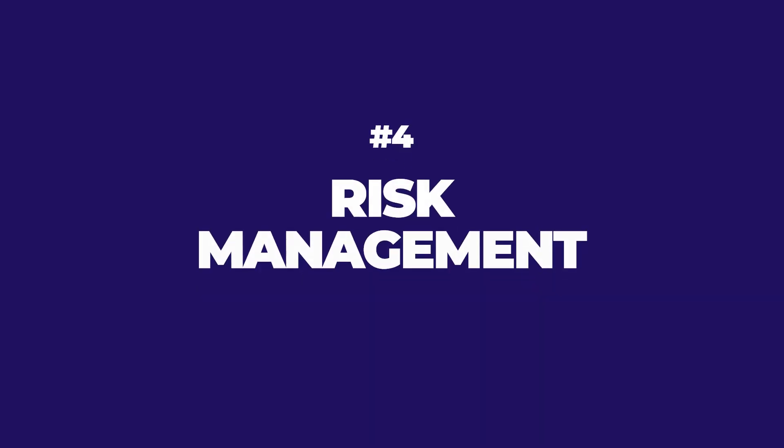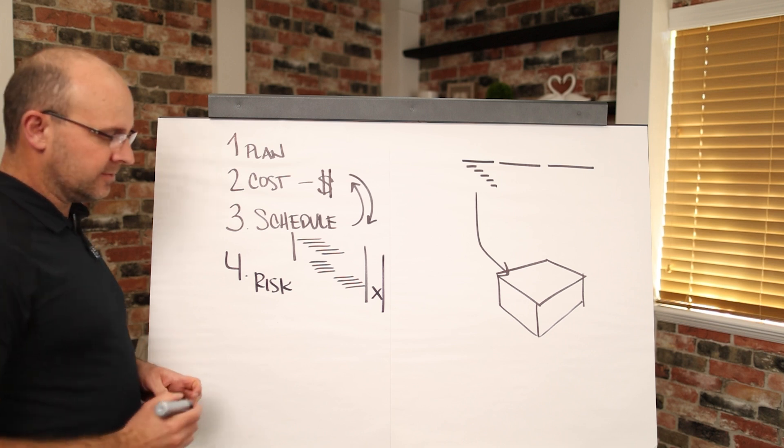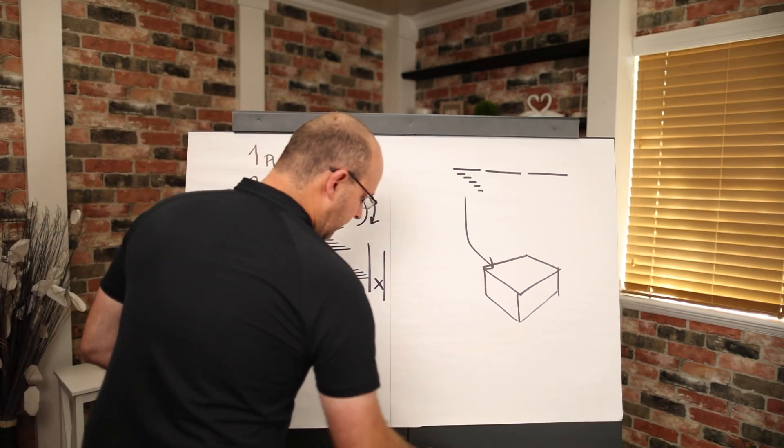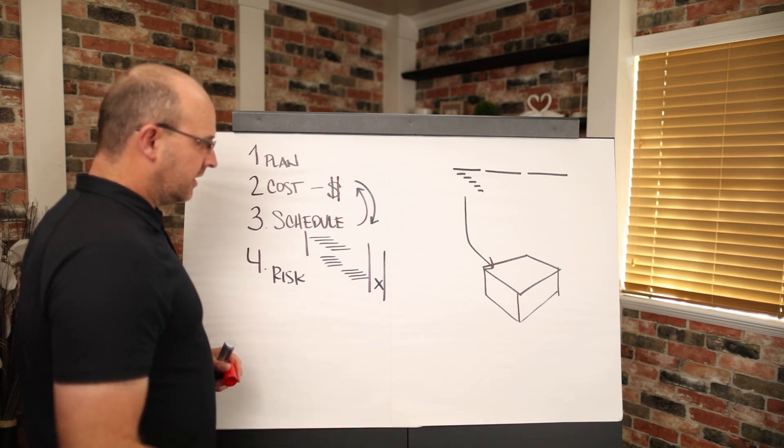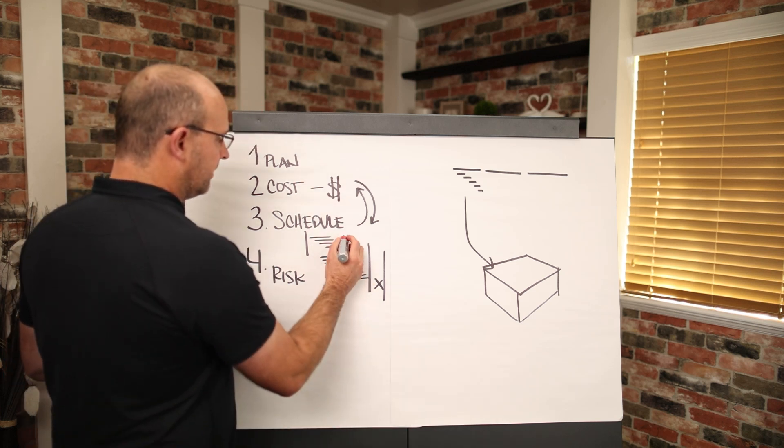Now, step number four is risk management, okay? So you've already attempted to find the problems, but I want you to know that there are risks, maybe problems that you've already planned around, you've already gotten a good plan, but things that could happen.